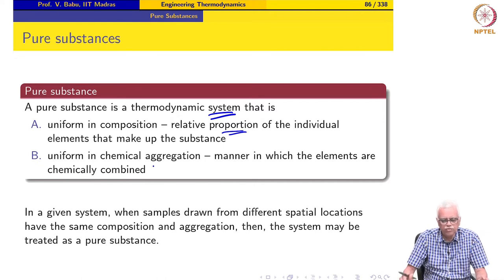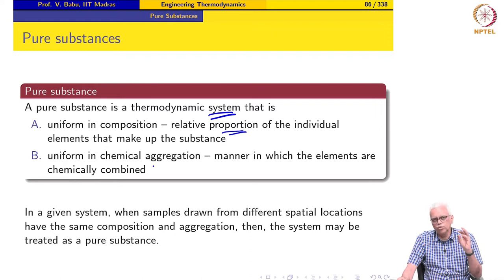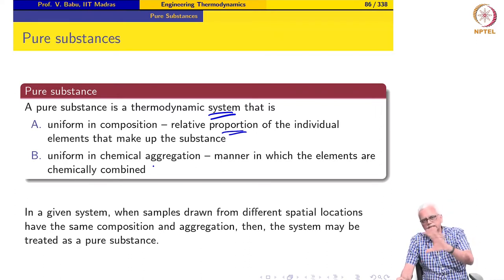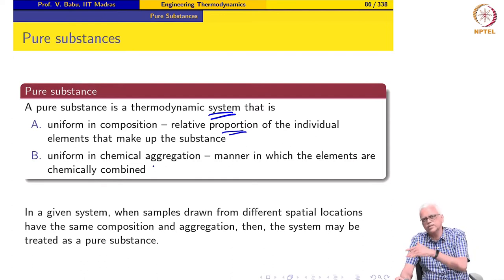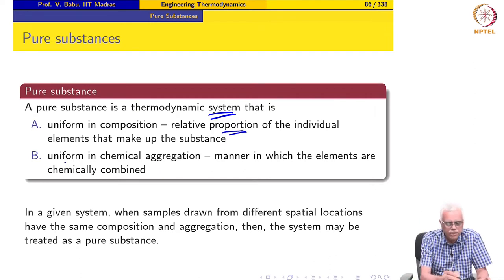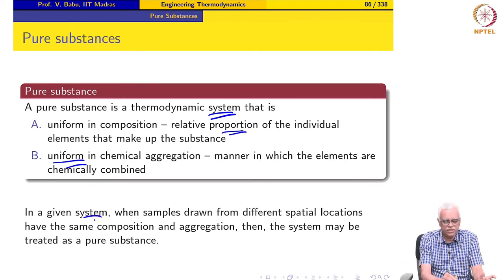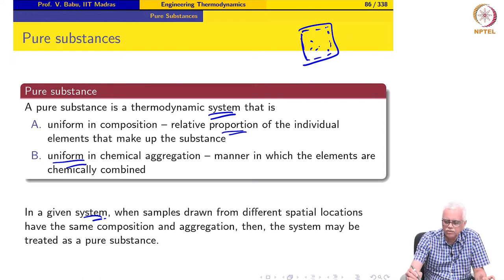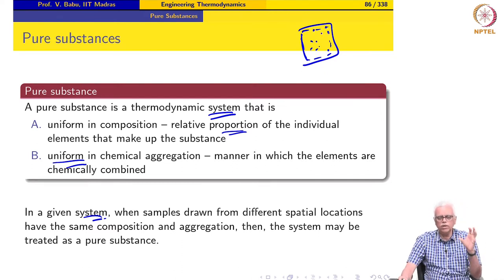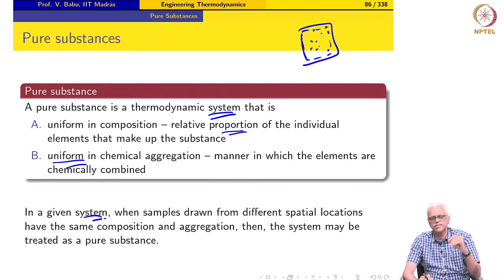The second requirement is that a pure substance must be uniform in chemical aggregation. What we mean is that so many atoms of oxygen are combined with so many atoms of hydrogen in a particular way — the atoms must be combined in the same manner throughout. The number of atoms must be the same (requirement A), and they must be combined in the same way (requirement B), because depending on temperature and other conditions, the same set of elements may combine in different ways to form different compounds. Basically, if I draw samples from different spatial locations in the system, the samples must all have the same composition and the same chemical aggregation.